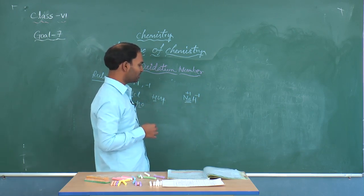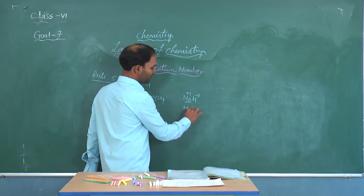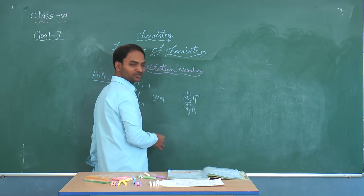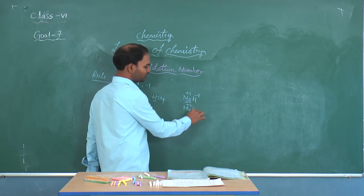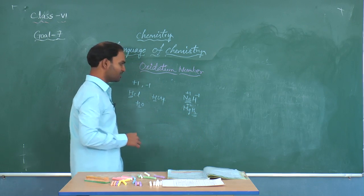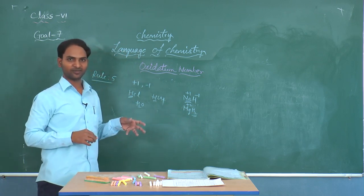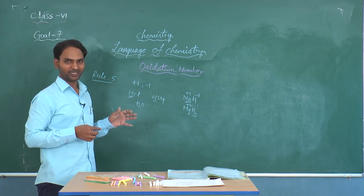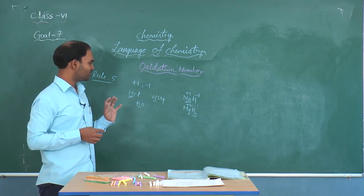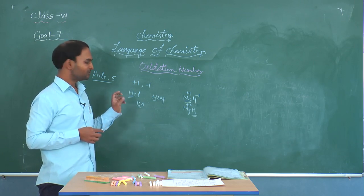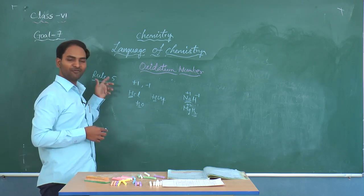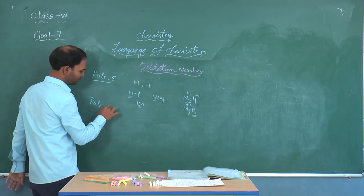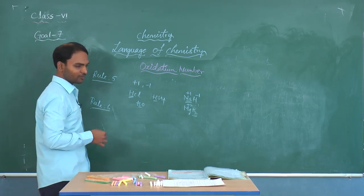Even if you take magnesium hydride, magnesium exhibits +2 oxidation state whereas hydrogen exhibits -1 oxidation state. That means in the case of metal hydrides, hydrogen exhibits -1 oxidation state, whereas in all other compounds it exhibits +1 oxidation state. That is Rule 5.